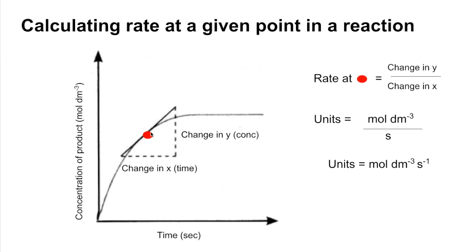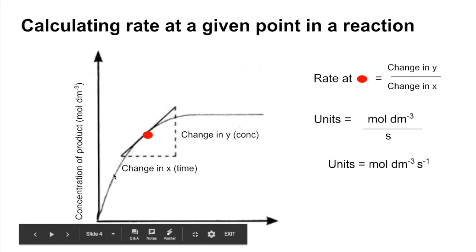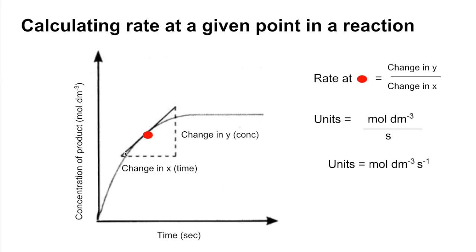As time goes on, the slope of the tangent — the gradient — actually gets lower. So we've got a high rate of reaction at the start because the gradient is very steep. It starts to slow down, the gradient gets less steep, then even less steep. And when the gradient reaches zero, the reaction has stopped.